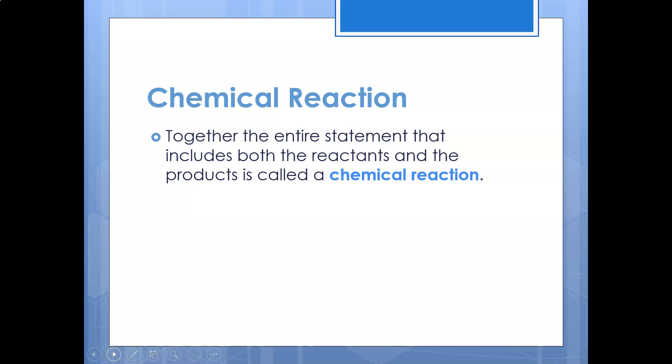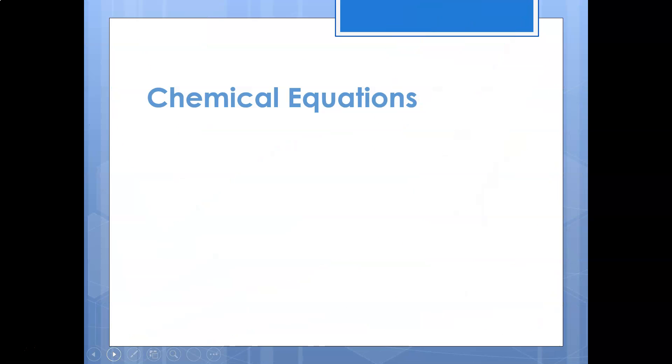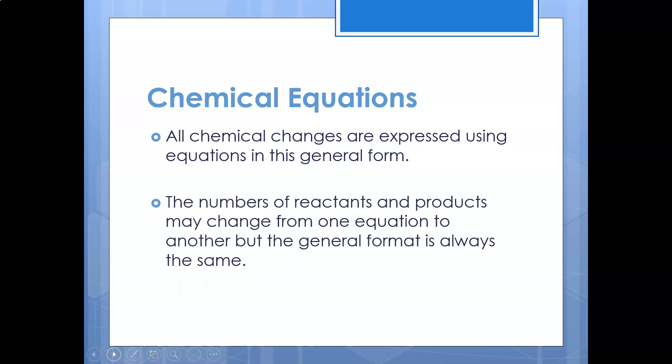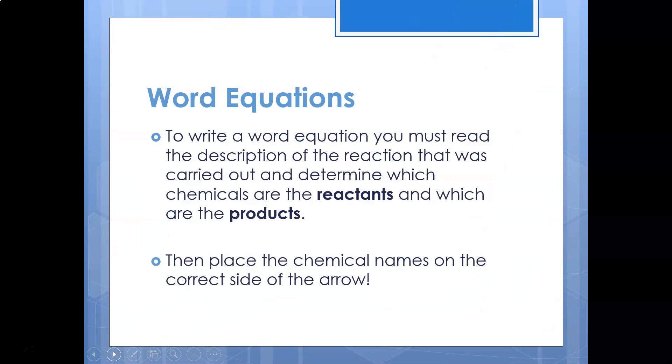Put together the reactants, the arrow and the products and we get our chemical reaction. These chemical changes can occur and they can be expressed in the general form. The number of reactants and products may change from one equation to another but the general format is always the same.